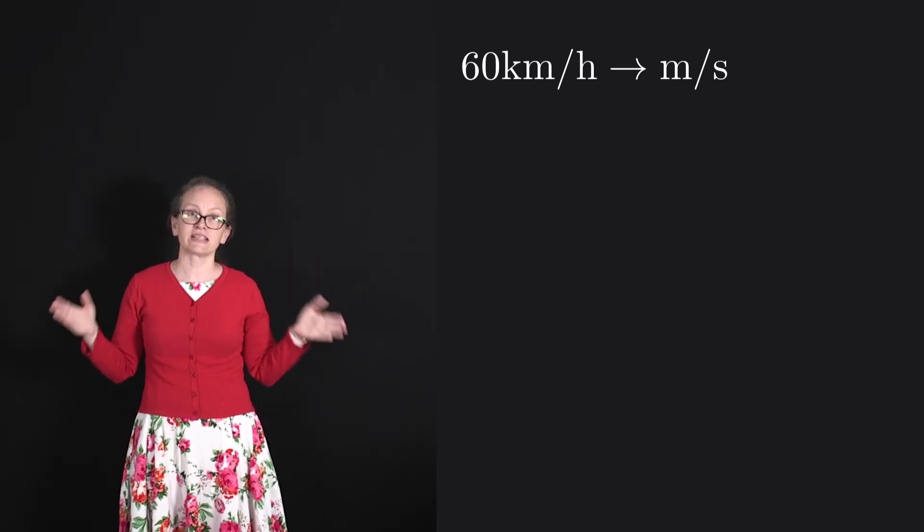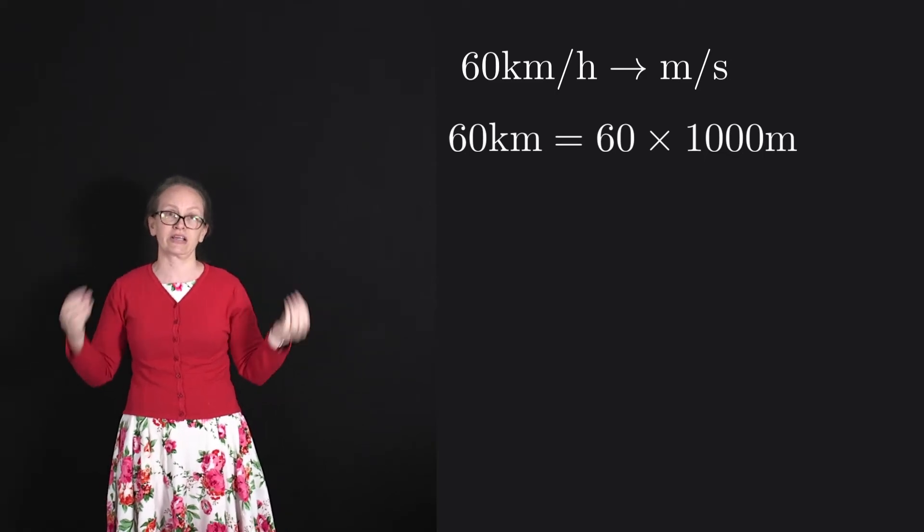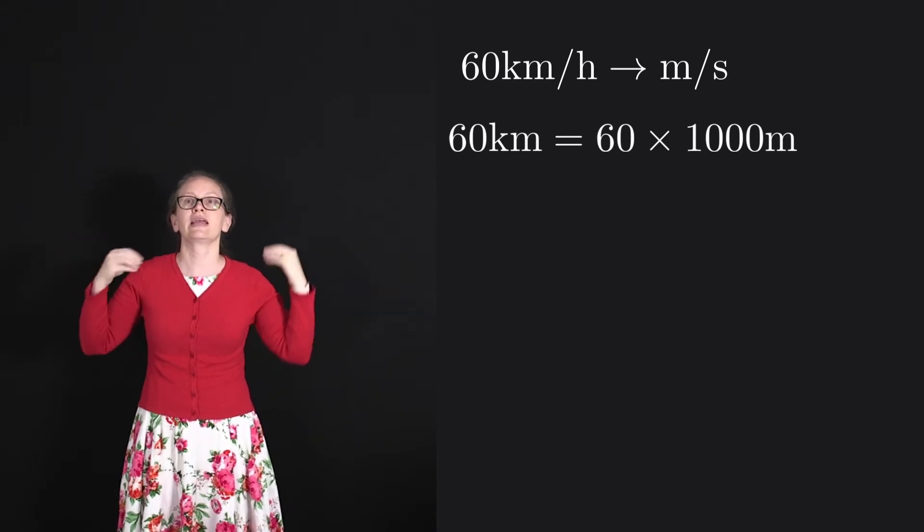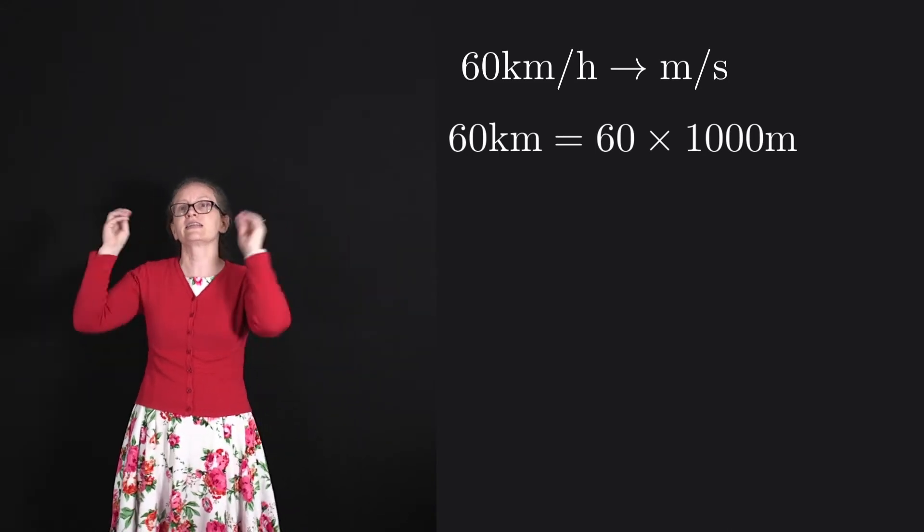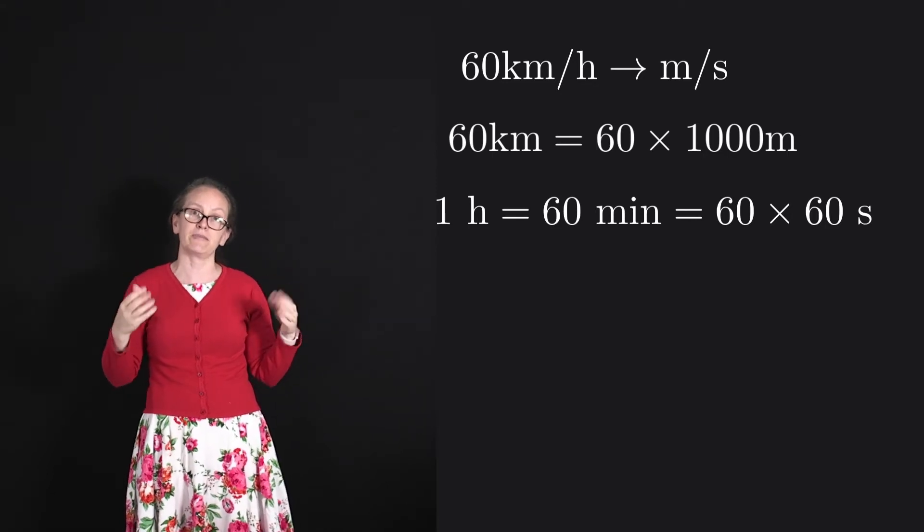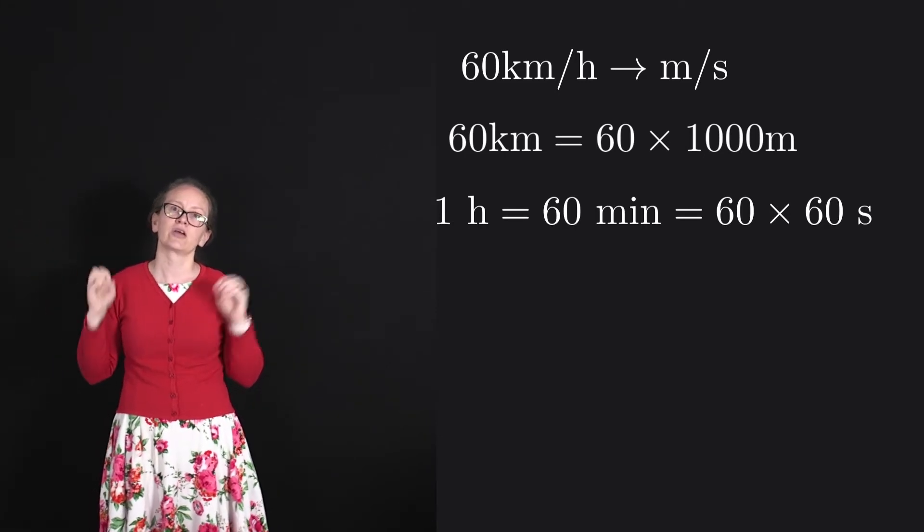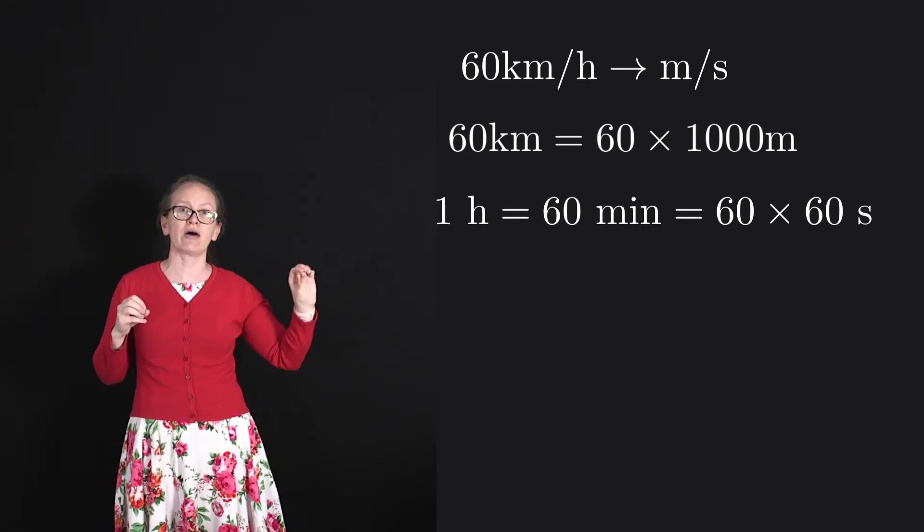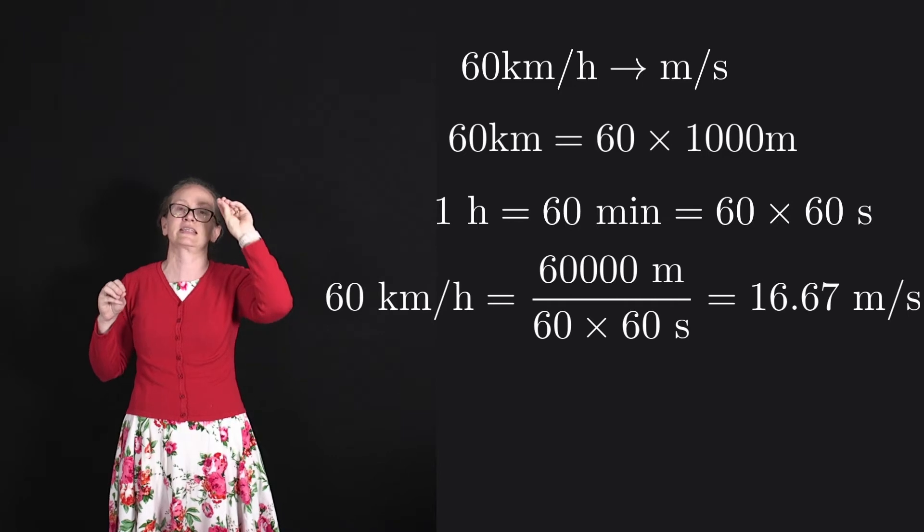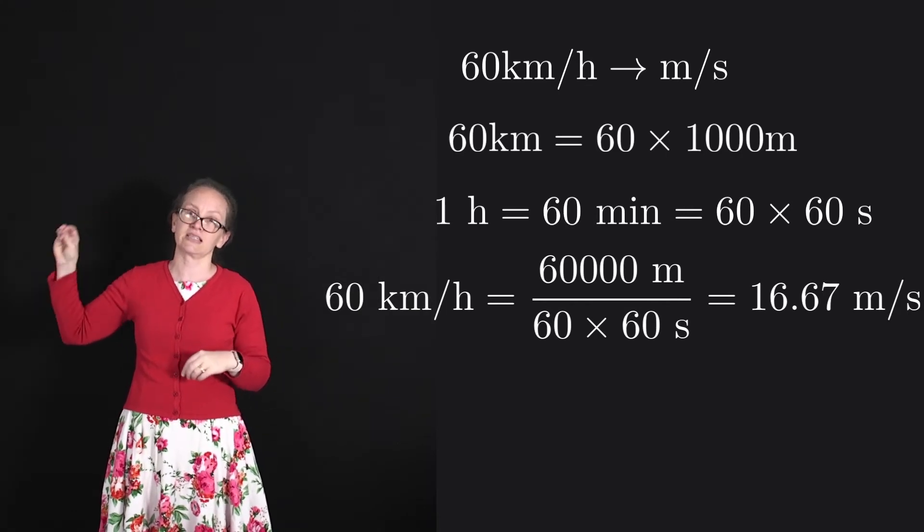Let's start with 60 kilometers first of all. The K in kilometers stands for kilo, which basically means 1000. So in 60 kilometers, there are 60 times 1000 meters. And in one hour, we know that there's 60 minutes, and in one minute, there's 60 seconds. So one hour is equal to 60 times 60 seconds. So 60 kilometers per hour is equal to 60,000 meters divided by 60 times 60 seconds. And if we solve this on the calculator, we end up with 16.67 meters per second.